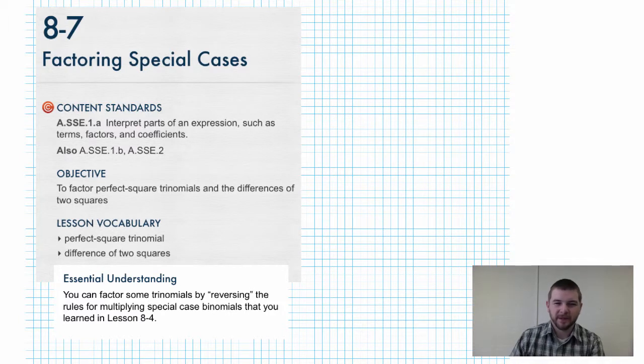The objective of this section is to factor perfect square trinomials and the differences of two squares. Lesson vocabulary: perfect square trinomial and difference of two squares. An essential understanding for this section: you can factor some trinomials by reversing the rules for multiplying special case binomials that you learned in lesson 8.4.